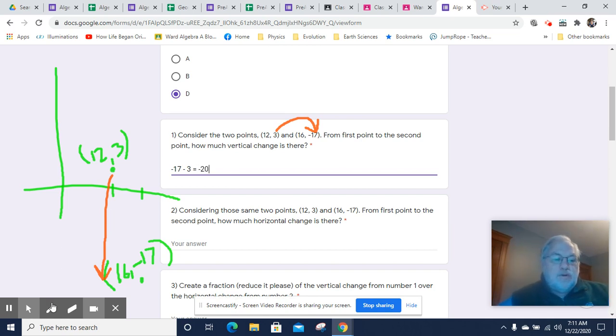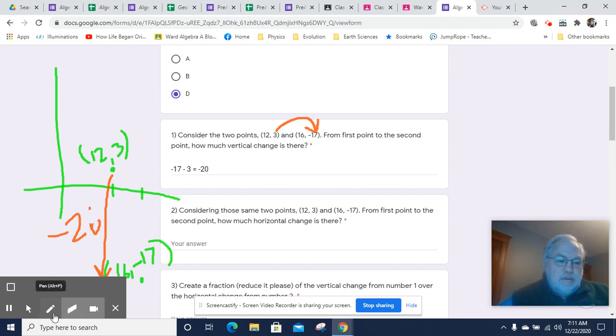So the change, the vertical change is negative 20, at least in that direction. Now let's look at the horizontal change. That's the next question.